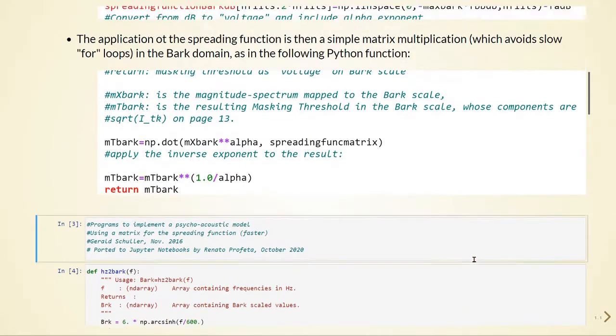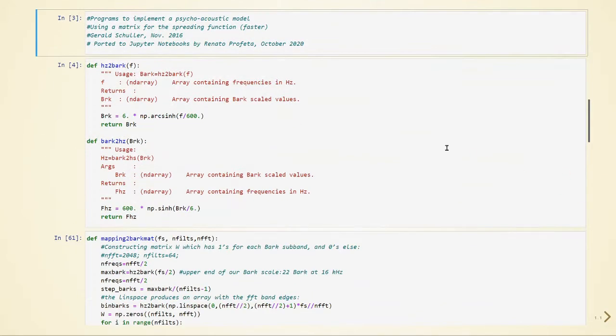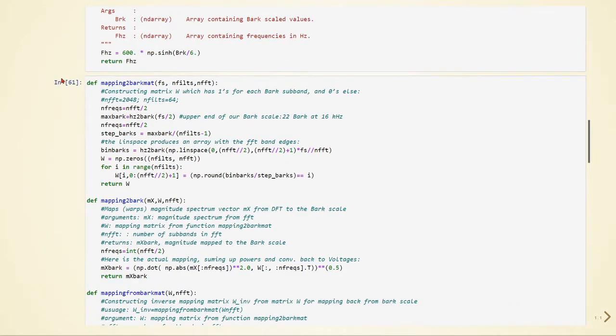We will also use some auxiliary functions. For example, we use Hertz to Bark, a function that converts from Hertz to Bark, and Bark to Hertz. Here we have this mapping to Bark math, which is a function that constructs a matrix W which has ones for each Bark subband and zeros elsewhere.